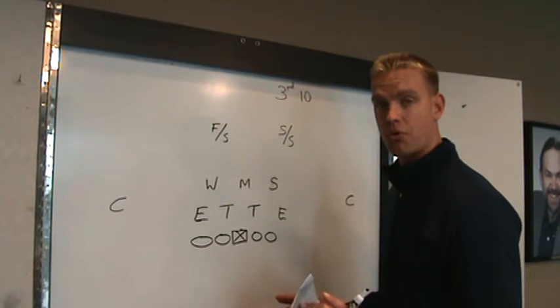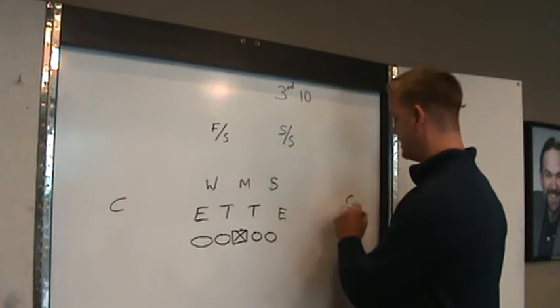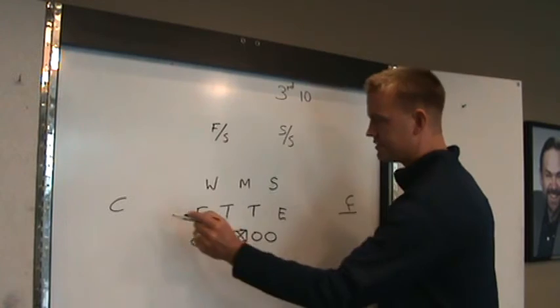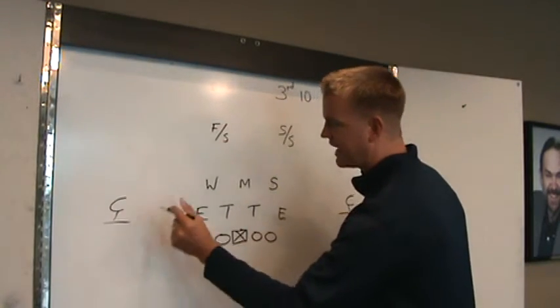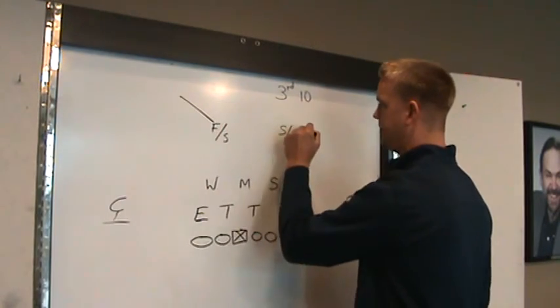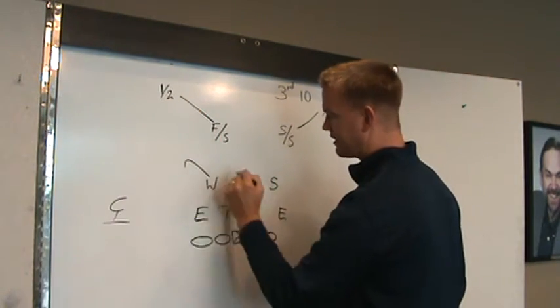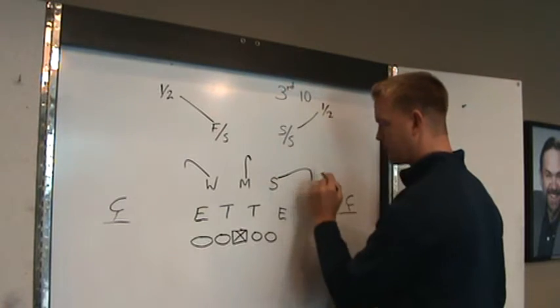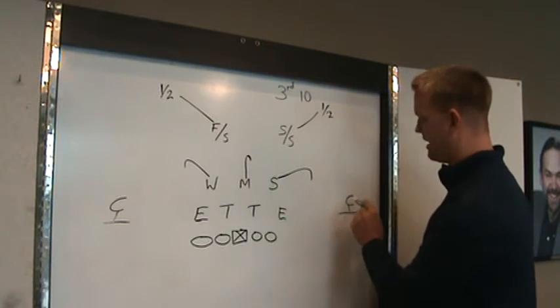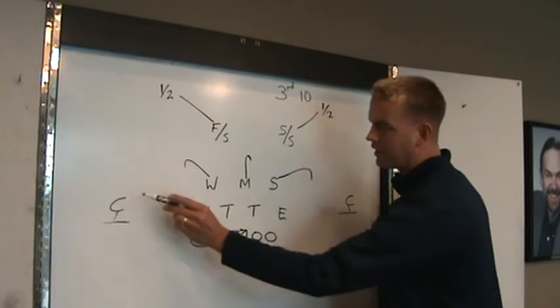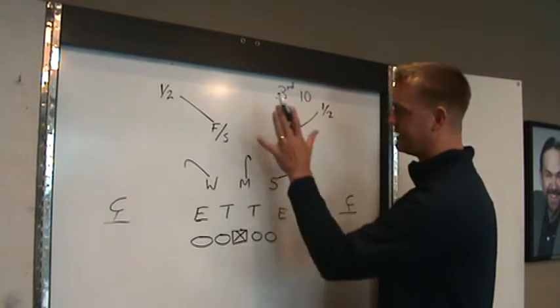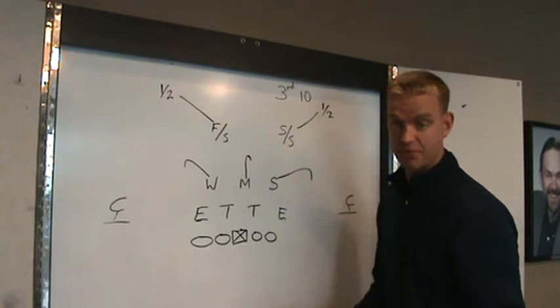In its simplest form, all cover two is, is a cloud coverage. Your corners are going to come up and press, these safeties are going to be over the top and have half the field to cover, this backer here, this backer here, strong side linebacker there. So you have one, two, three, four, five underneath and two deep, that's in its simplest form.